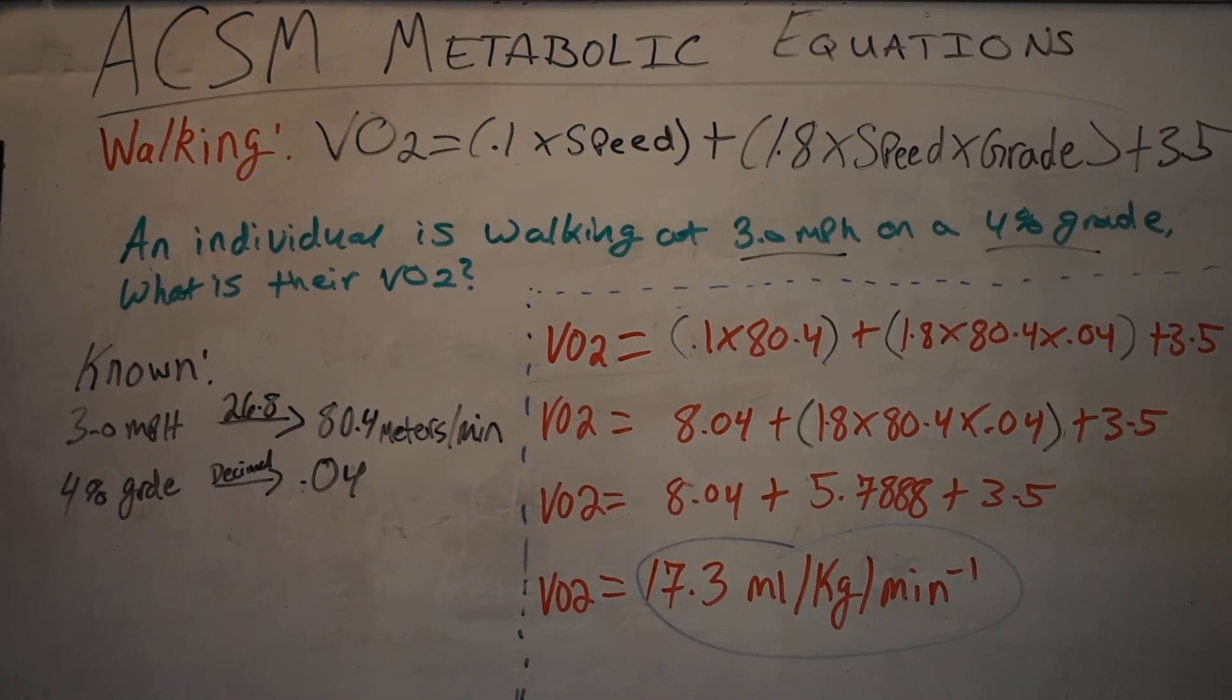Now all you have to do is add those three numbers together, and that will give you your VO2 at that particular speed and particular incline.